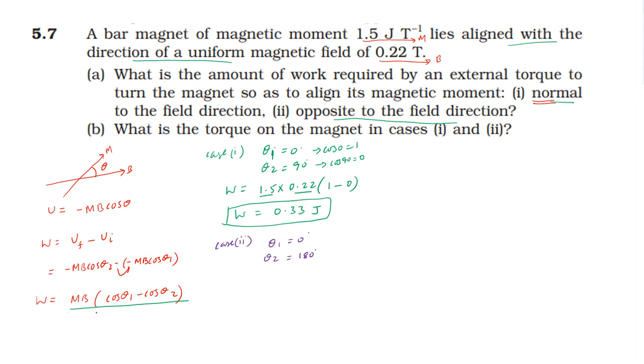So this case, the formula is W is equal to 1.5 into 0.22 into cos theta 1 minus cos theta 2. Cos theta 1, cos 0 is 1. Cos 180 is minus 1. Minus into minus plus. 1 plus 1 is 2.